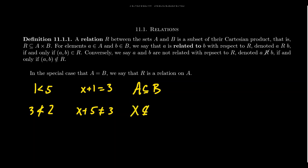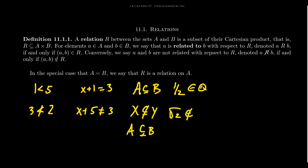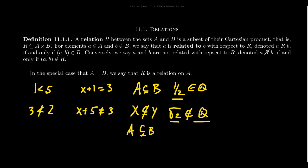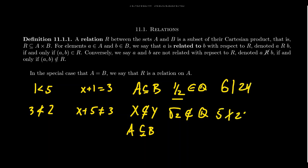Element containment is also relational: one half is an element of the rational numbers, but the square root of two is not a rational number — the 'element of' symbol indicates a relationship between a number and a set. Divisibility is another example: six divides 24, but five does not divide 24. We also have inequalities like less than or equal to, greater than, greater than or equal to. Even the approximation symbol is a relation — pi is approximately 3.14, meaning there is a relationship of nearness, though pi is not equal to 3.14.